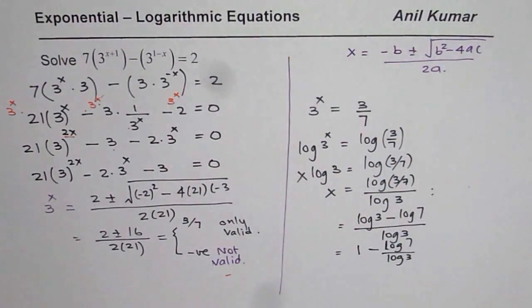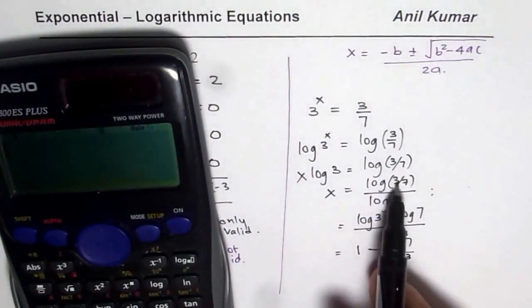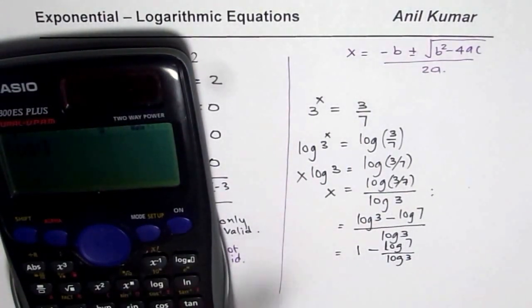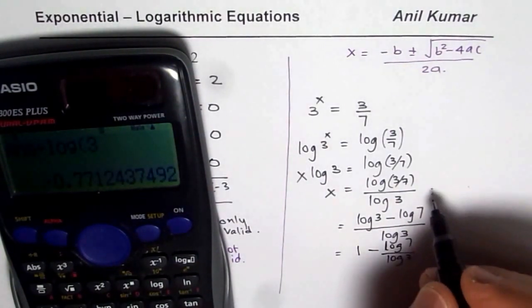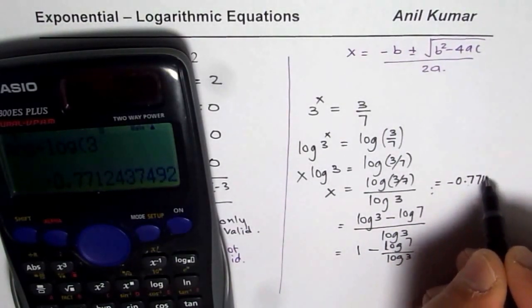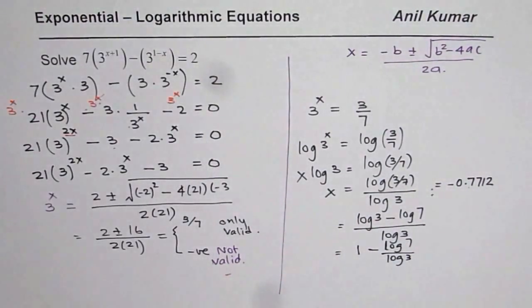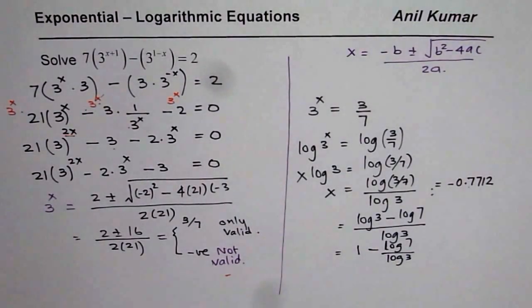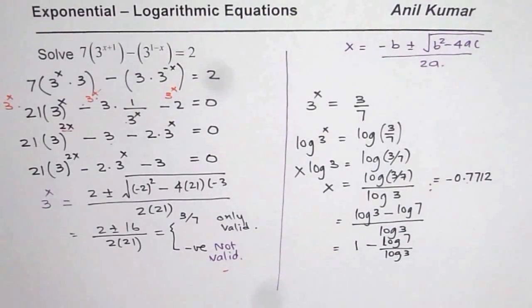Now let us calculate the numerical value: log of 3 over 7 divided by log of 3 gives us minus 0.7712. So the answer can be expressed either as a decimal value or in logarithmic form. That is how you can solve this equation. I hope that helps. Thank you.